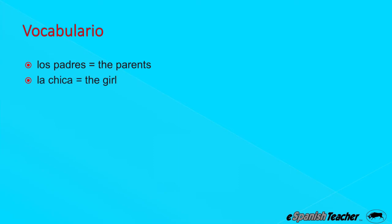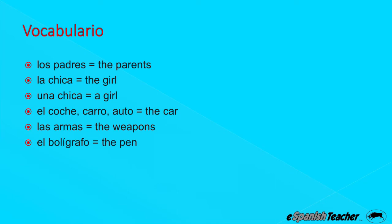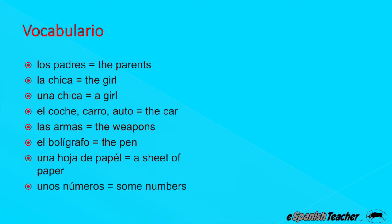La chica. Una chica. El coche. El carro. El auto. These are all three different ways to say the car. Las armas. El bolígrafo. Una hoja de papel. A sheet of paper. Unos números. Notice that written accent over the U in números.